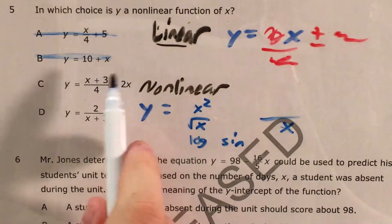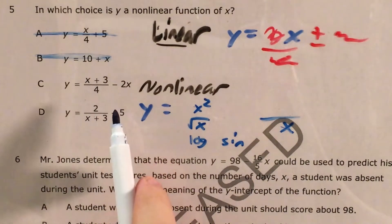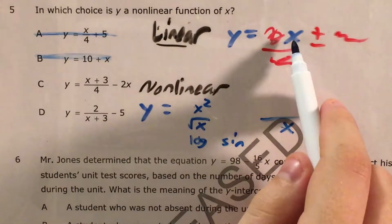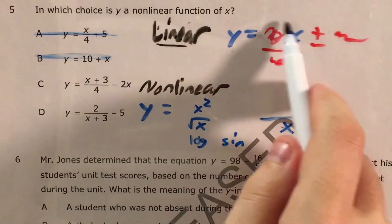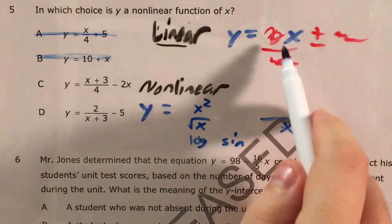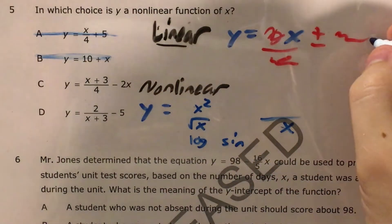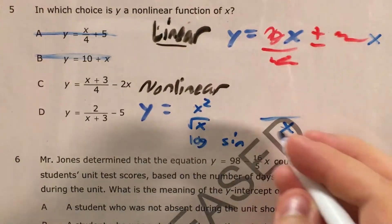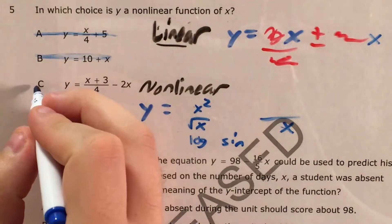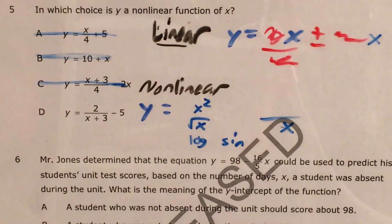For C, x plus 3 over 4 and then minus 2x. So this is some junk or x inside a fraction with some junk on it. And then we have an x over here, but we don't have x on the bottom of a fraction, so we're still linear on choice C. So C is not our answer, leaving choice D.